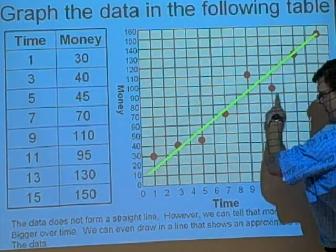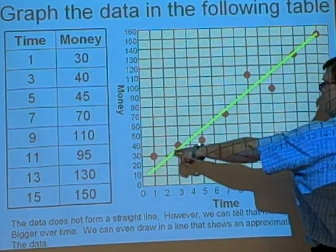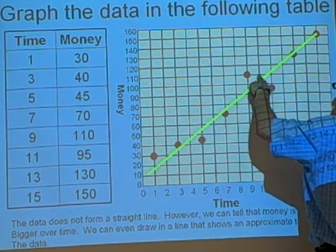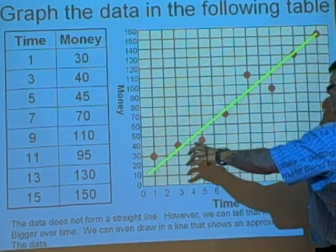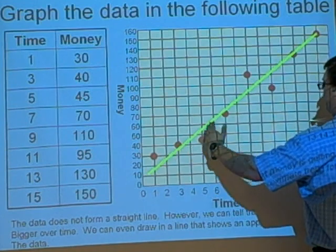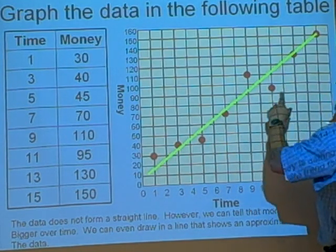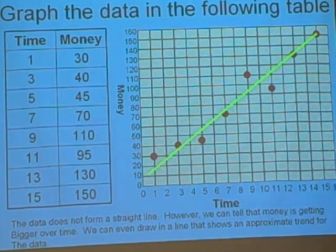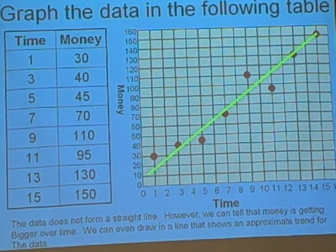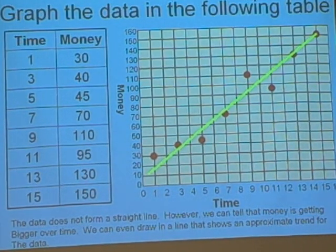We can even draw a line that shows an approximate trend for the data. This line, when you draw it in, if you're drawing it on your own, you want to make sure that no point is any further away than the others. So you want to make sure it goes through the middle. Does it have to actually go through any of the points plotted? Not necessarily. But it does need to go through the middle trending area.